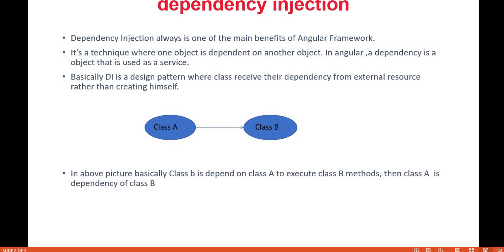Dependency injection is the main feature of the Angular framework. To understand it, consider Class A and Class B. Class B is dependent on Class A — some operations in Class B can only be performed when it gets data or functionality from Class A. So to perform its operations, Class B has to access Class A.